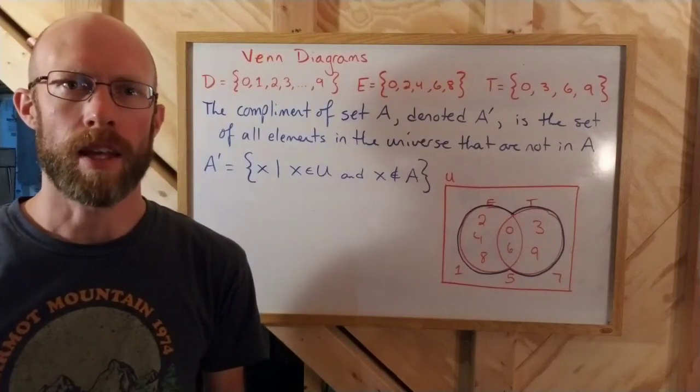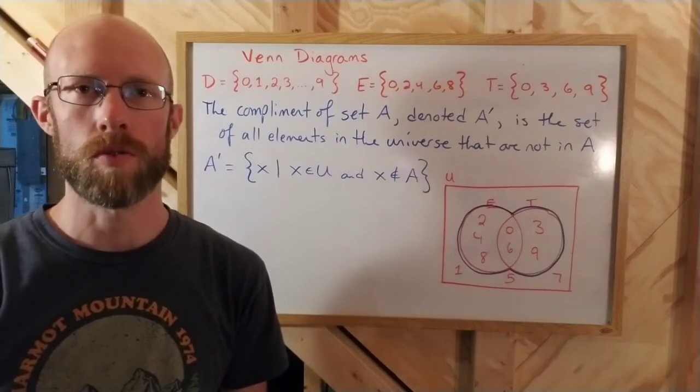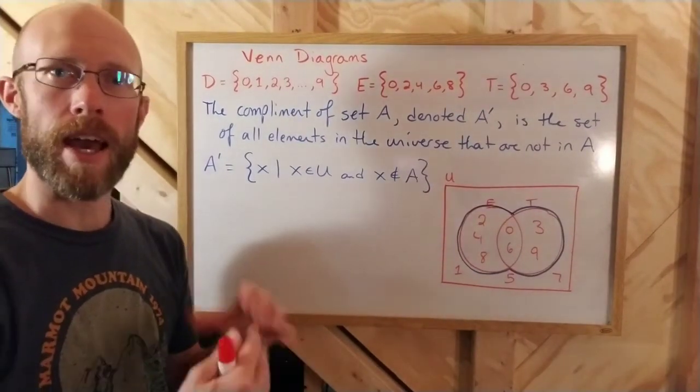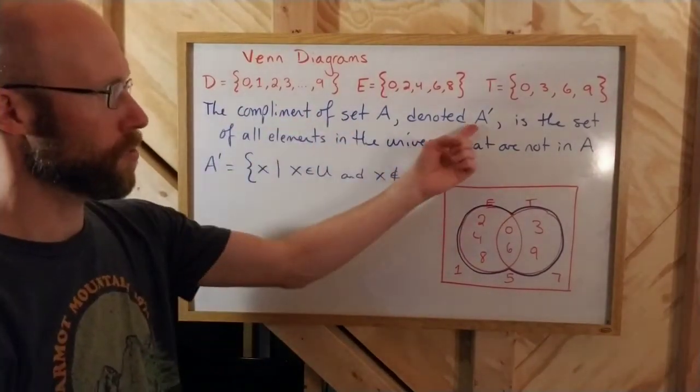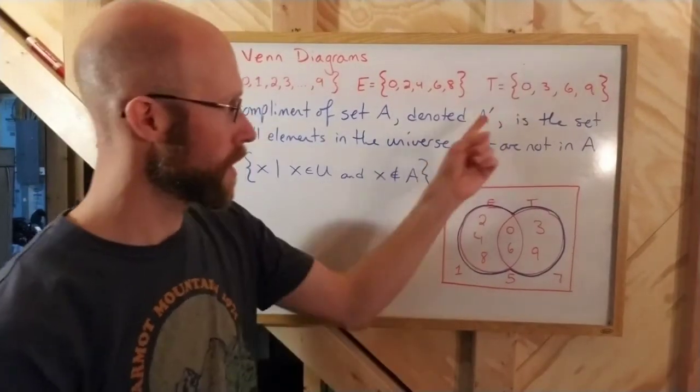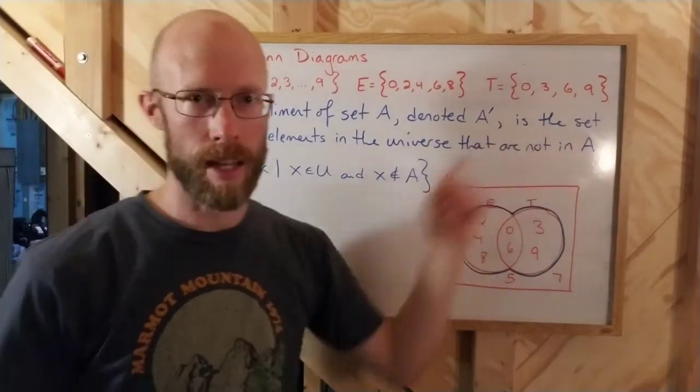Next we're going to look at the elements that are not in sets. We'll call those the complement of sets. So a set A has its own elements. The complement of a set A, denoted by A prime, is kind of like the negation of the set, everything that's not in it, is the set of all elements in the universe that are not in A.